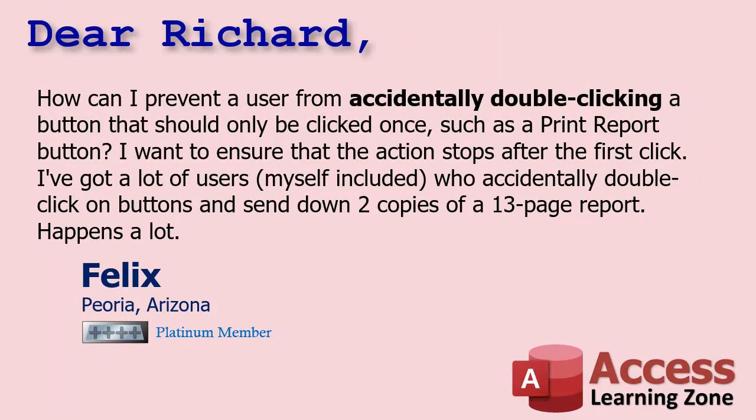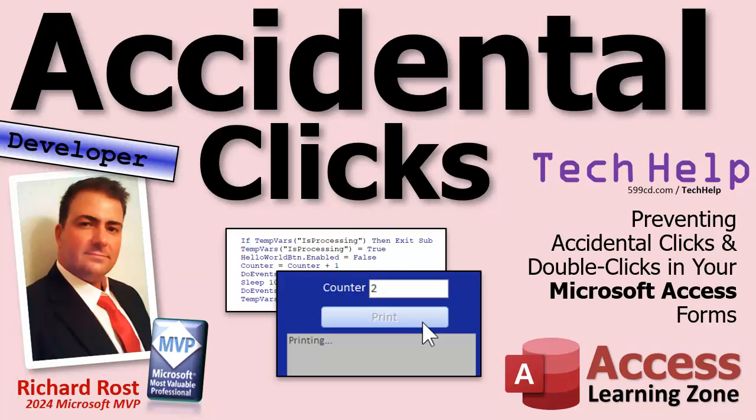Today's question comes from Felix in Peoria, Arizona, one of my platinum members. Felix asks: how can I prevent a user from accidentally double-clicking a button that should only be clicked once, such as a print report button? I want to ensure that the action stops after the first click. I've got a lot of users — myself included — who accidentally double-click on buttons and send two copies of a 13-page report. This has happened to me too — I used to have an end-of-month report that involved action queries like an append query, and once in a while I'd accidentally double-click it.